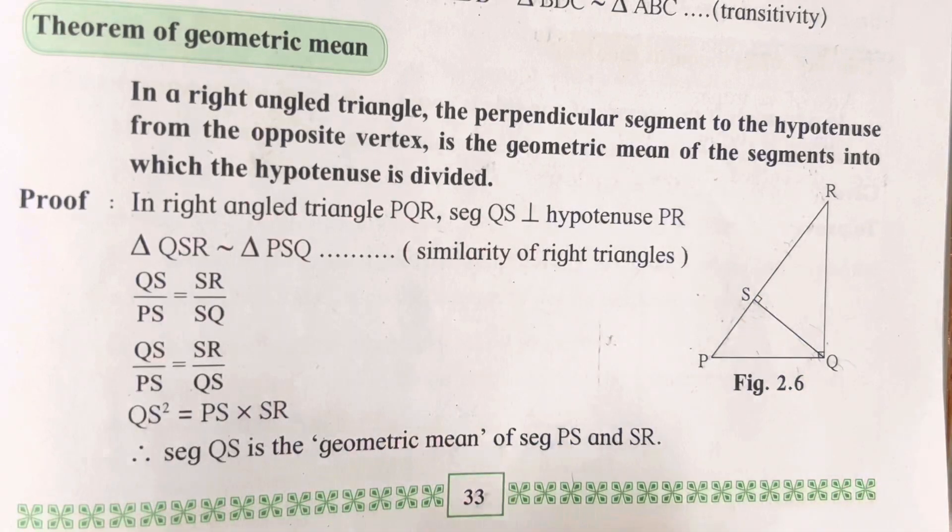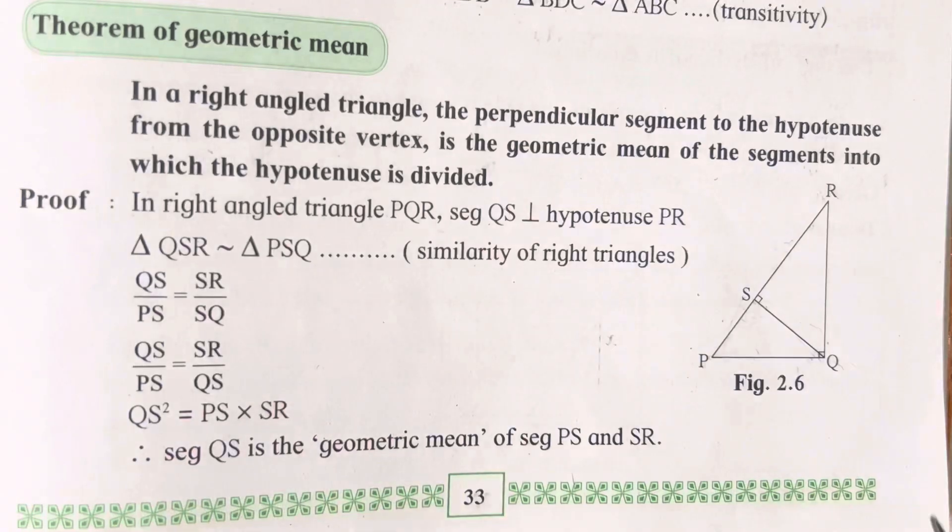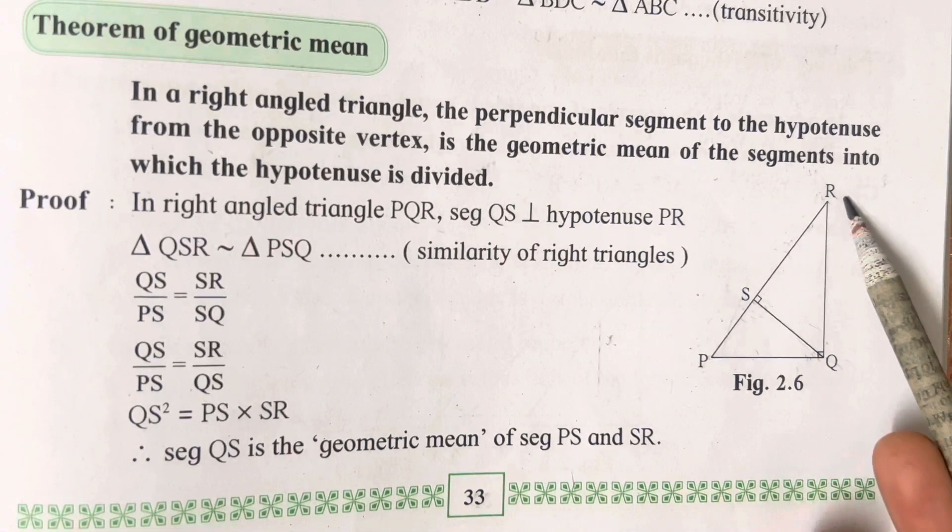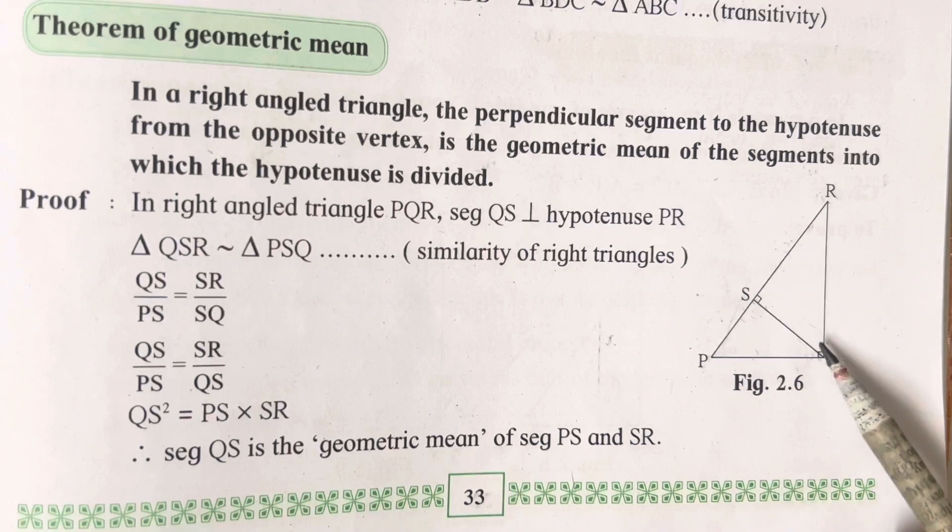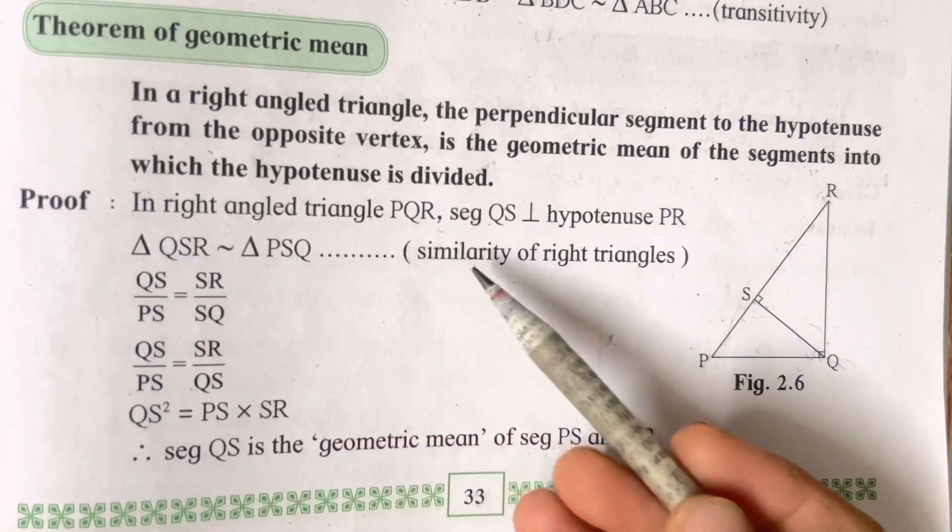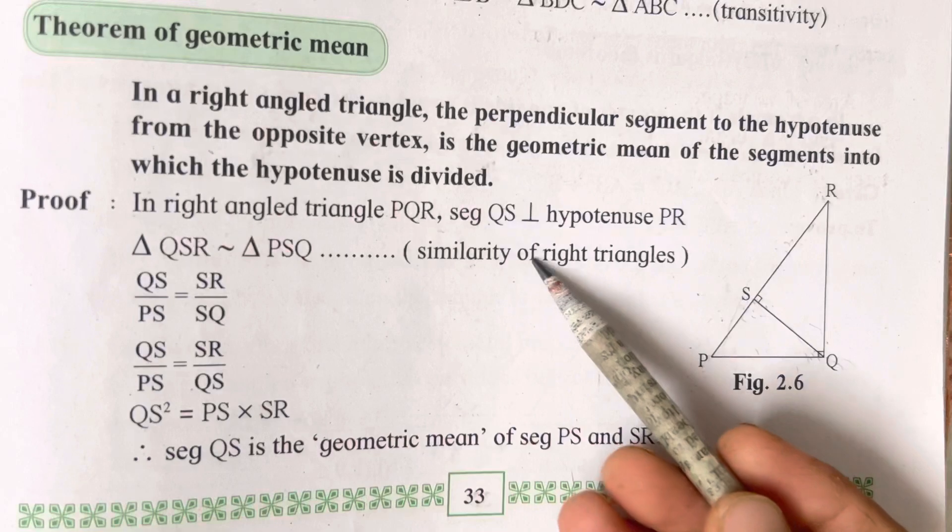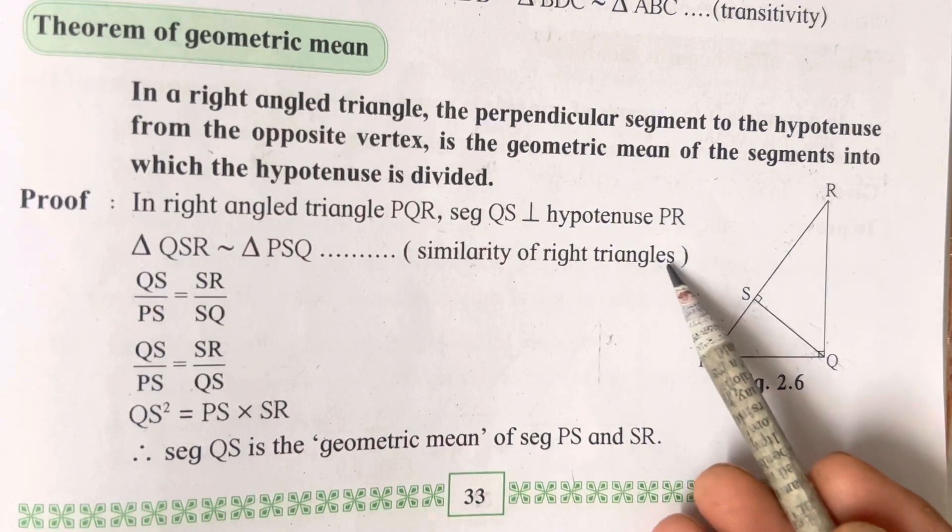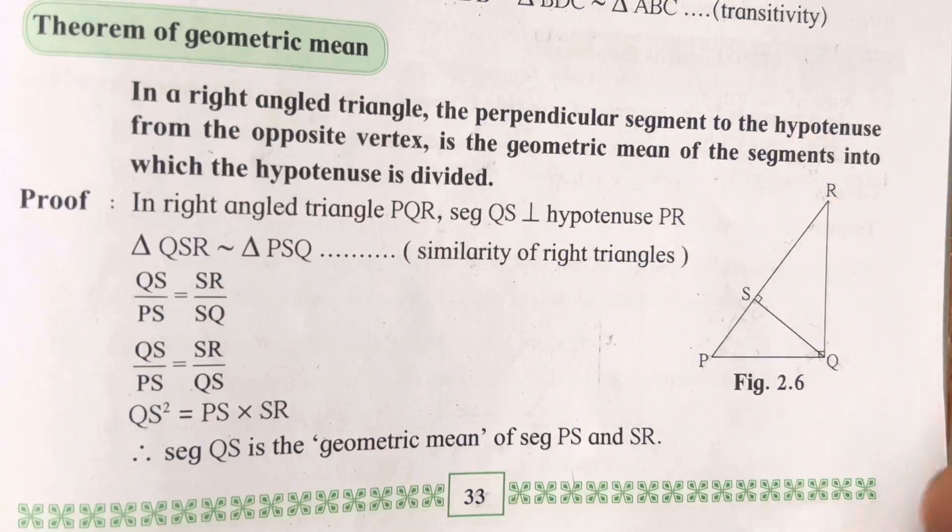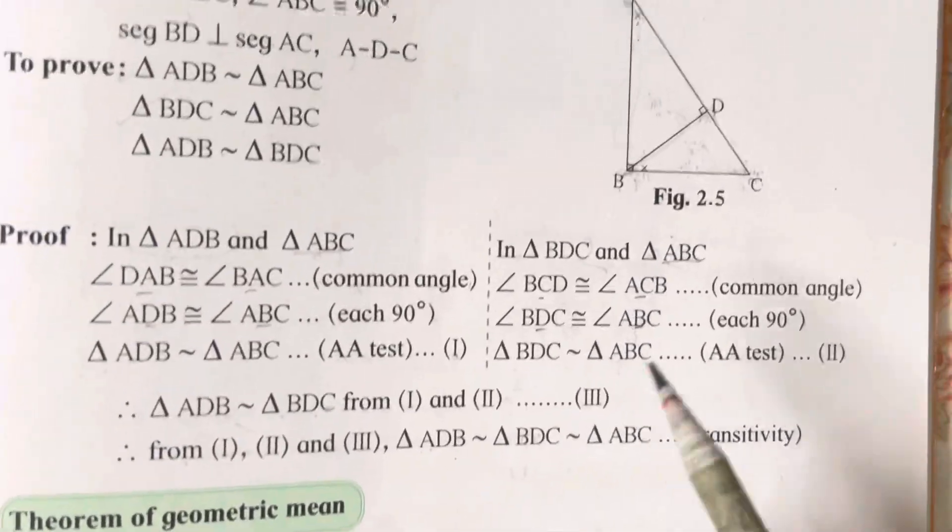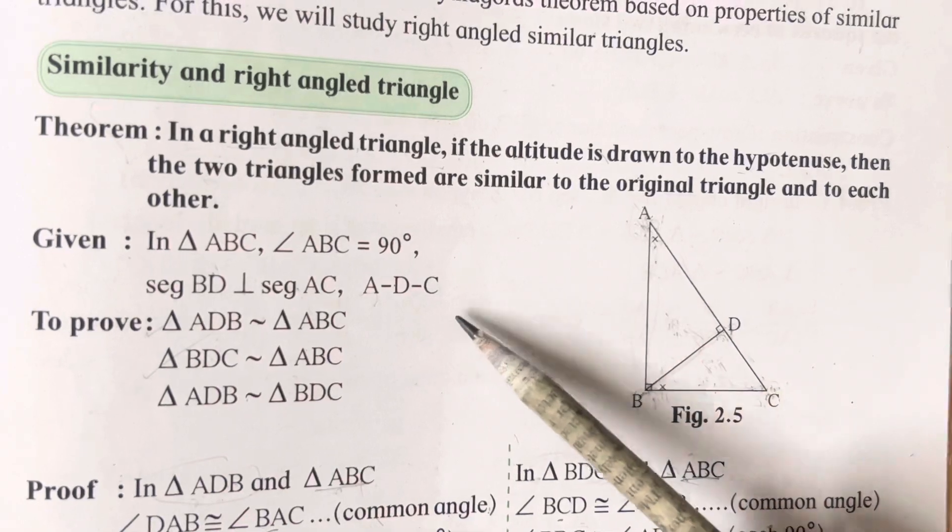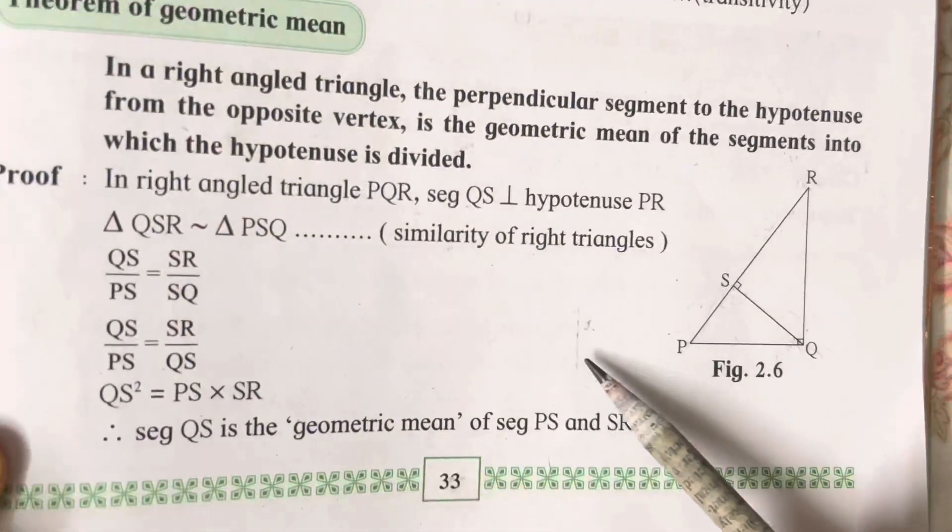This is the first statement. We have taken this from the question itself, from the diagram. Nothing much has to be explained. Now you will see you have formed two triangles—triangle QSR and PSR are similar as similarity of right triangles. Just now in the last video we have studied about similarity in right-angled triangles.